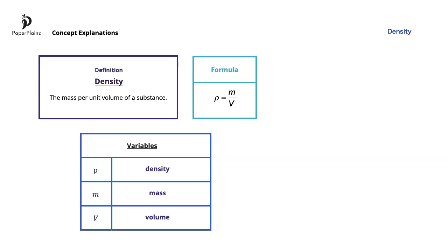Let's move on to see a quick example of how to use this formula. Before we start our calculations, let's just note that the two most commonly used units for density are kilograms per cubic meter and grams per cubic centimeter.